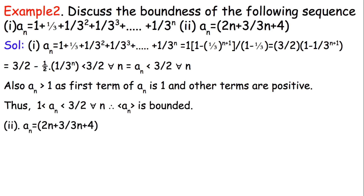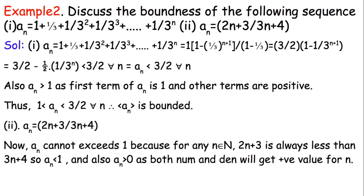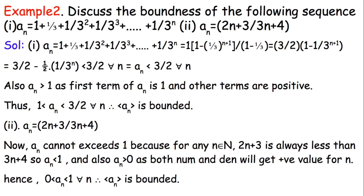Now for the second boundedness example: AN cannot exceed 1 because for any N belonging to natural numbers, 2N+3 is always less than 3N+4. Both numerator and denominator are positive for any natural number N, so AN is always bounded below by 0. Therefore AN lies between 0 and 1 for all natural numbers N, so AN is a bounded sequence.